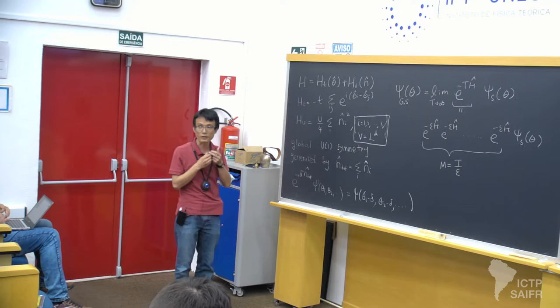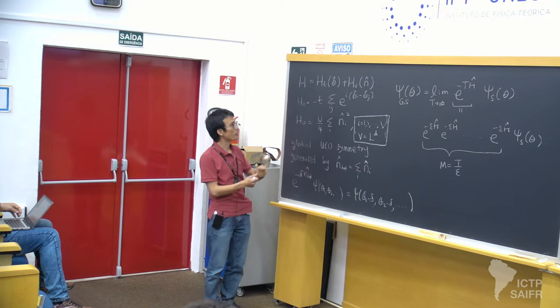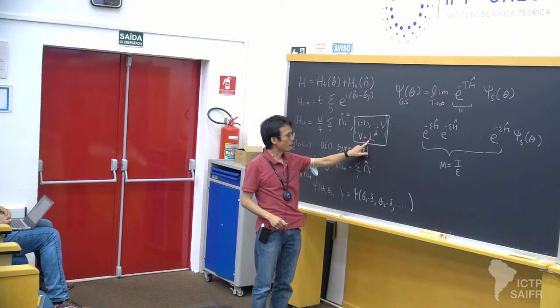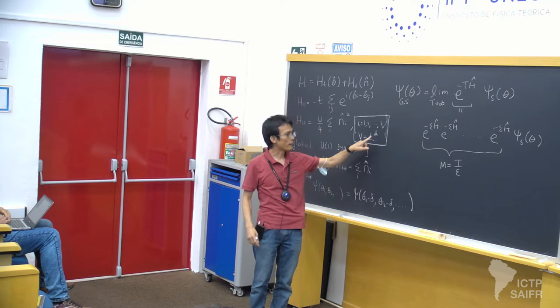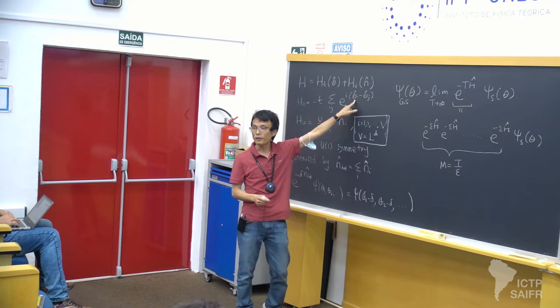We are considering a particular model of rotors. There's some lattice of L^D sites, where L is the linear size and D is the space dimension. So if it's two-dimensional, think of square layers. At each site, there is a rotor which can rotate within a circle.